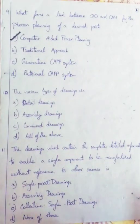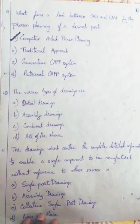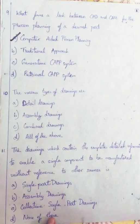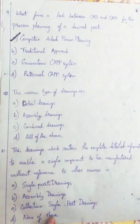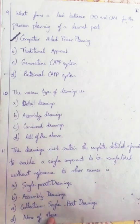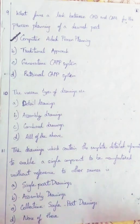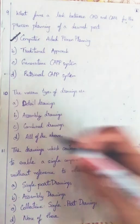Question 10: What are the various types of drawings? There are three types of drawings: detailed drawings, assembly drawings, and combined drawings. So we will be going with All of these.